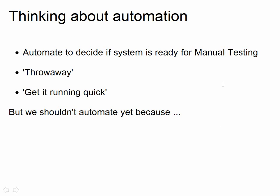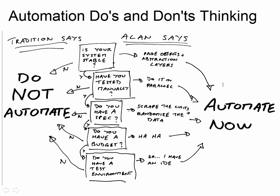Starting to think about automation: the main reason for automating was to decide if the system was actually ready for manual testing, because we were wasting so much time. It's essentially throw-away automation — we could make it long-term, but really we're trying to fix a problem. Because of this, it had to be done quickly. But under these circumstances, traditionally you shouldn't automate yet. Traditionally, you automate when your system is stable, when you've done manual testing, when you have a tight spec, when you have a budget, when you have automated tools and a stable test environment. But over time, we've learned automation approaches that help us get over some of these traditional objections.